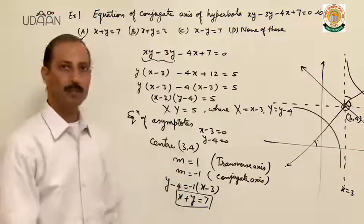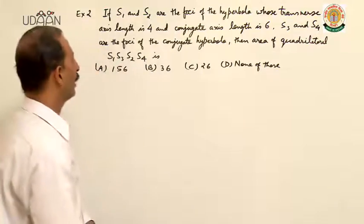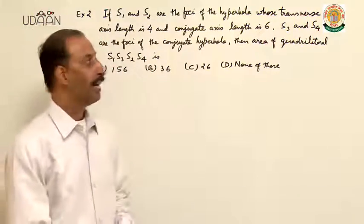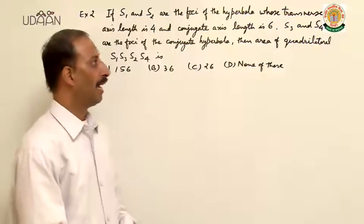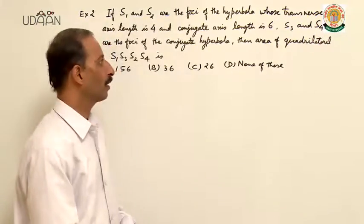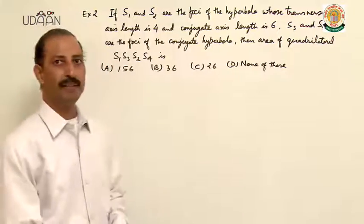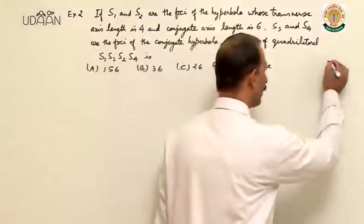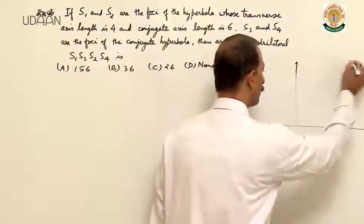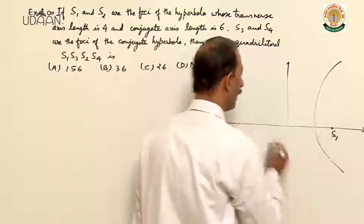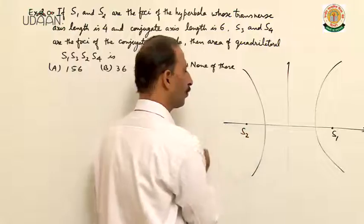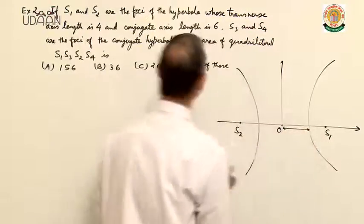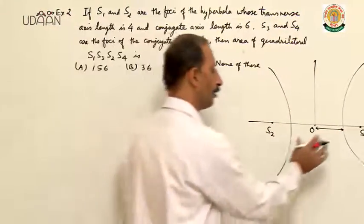In this example, S1 and S2 are the foci of the hyperbola whose transverse axis length is 4 and conjugate axis length is 6 units. S3 and S4 are the foci of the conjugate hyperbola. Find the area of the quadrilateral formed by S1, S3, S2, S4. First of all, see the hyperbola. This is the focus S1 and S2, and the center O. Total length of transverse axis is 4 units, so length of OA is 2 units.